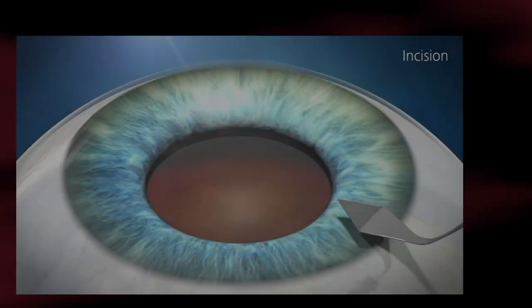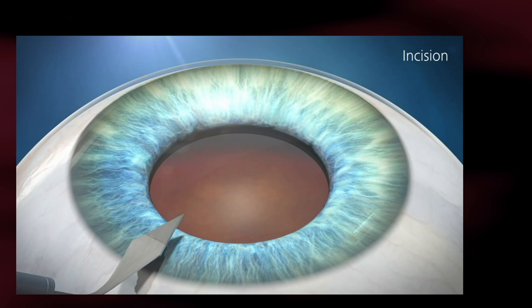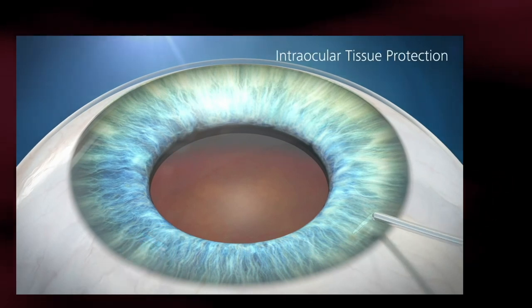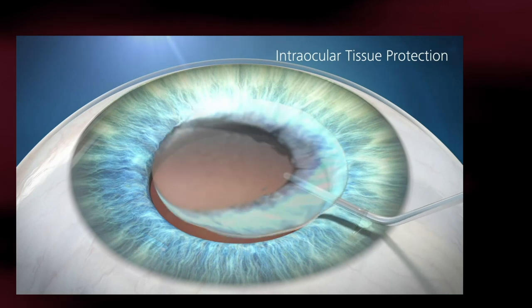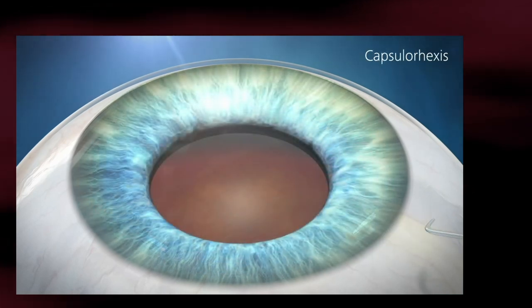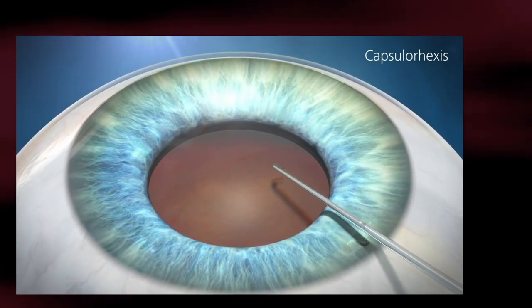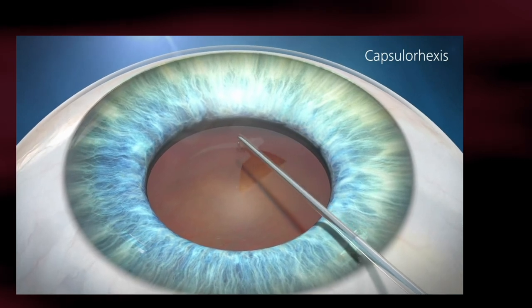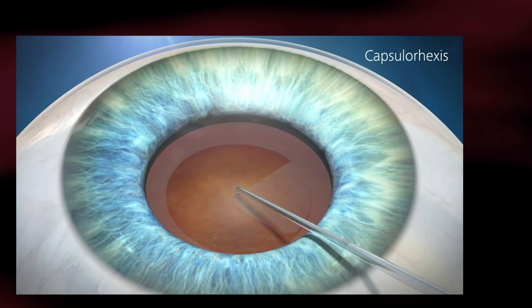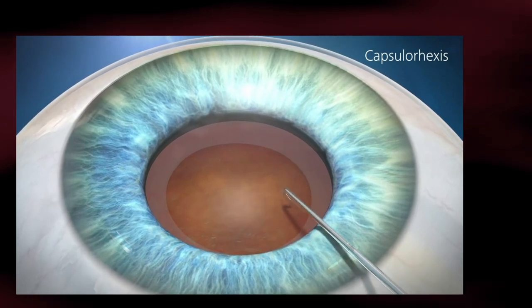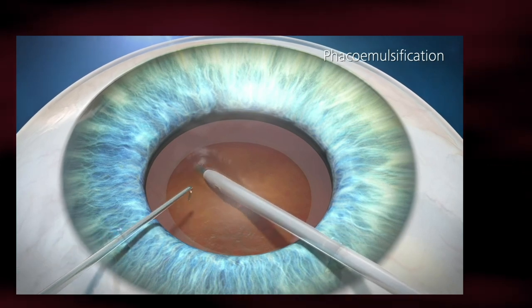First, the surgeon makes a main incision of about two millimeters at the junction between the cornea and sclera, injecting a viscoelastic surgical device, OVD, inside the anterior chamber. Then, the surgeon carefully opens the capsular bag where the lens is located and creates a round, continuous opening of approximately 5.5 millimeters. Using an ultrasound probe, the cloudy lens is broken down and gently removed via suction, leaving a clear capsular bag.